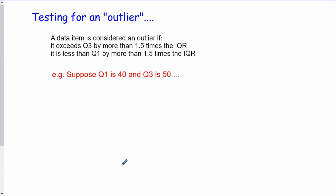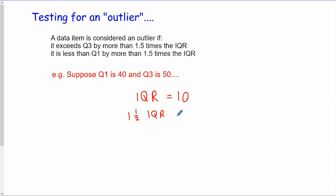We sometimes need to test whether an item is an outlier. A data item is considered an outlier if it exceeds Q3 by more than 1.5 times the interquartile range, or if it is less than Q1 by that amount. For example, suppose Q1 is 40 and Q3 is 50. The interquartile range is 10, and 1.5 times that is 15. So anything less than 25 or bigger than 65 would be considered an outlier, and might be excluded from the data set as an anomaly.